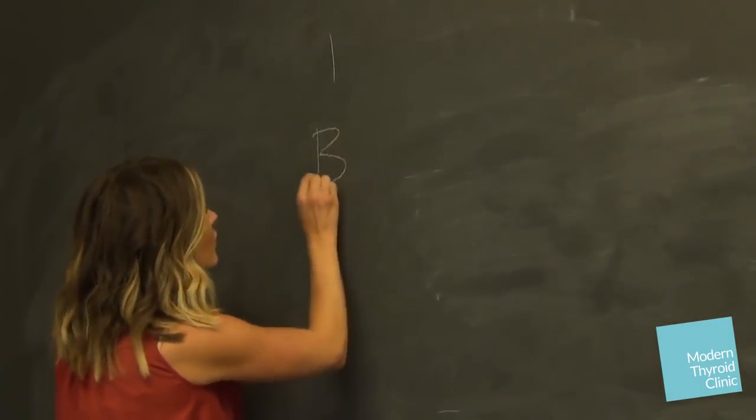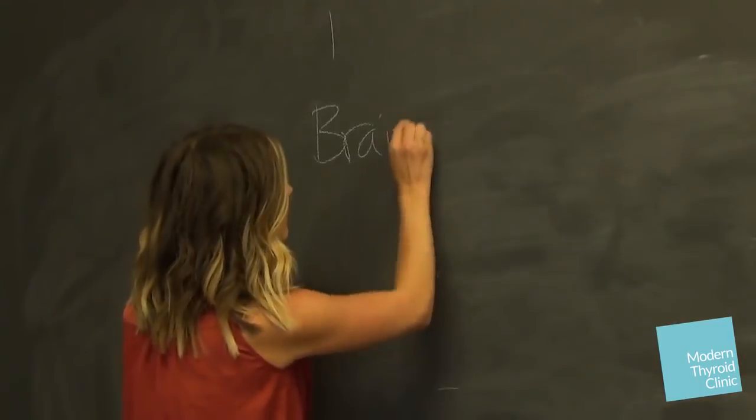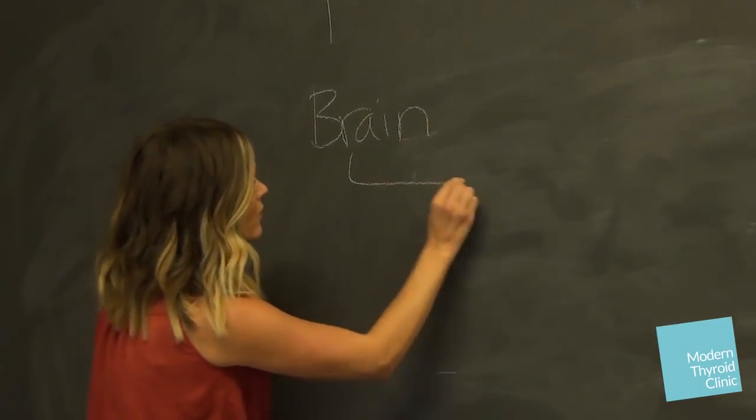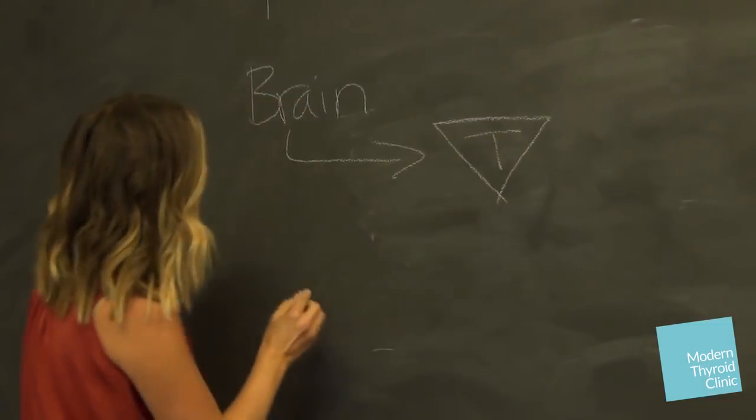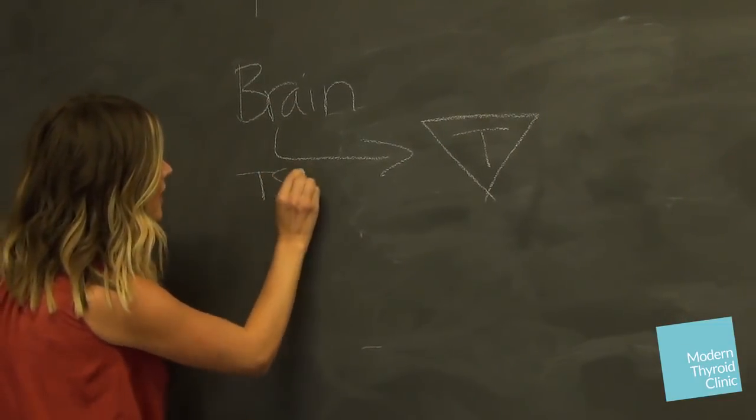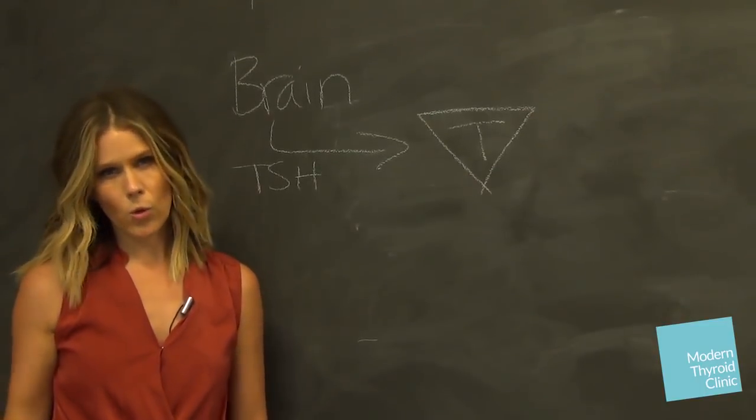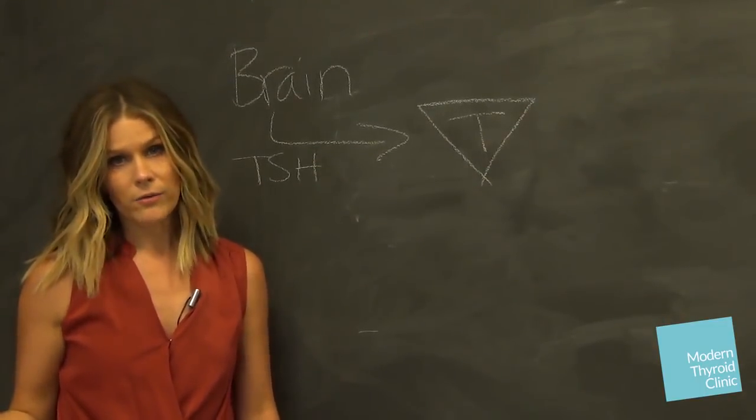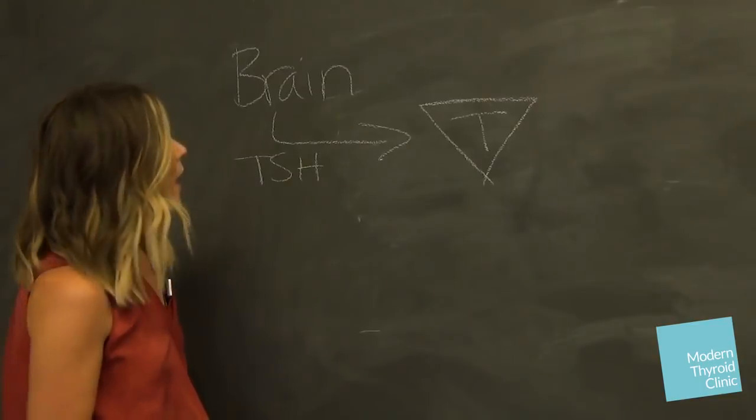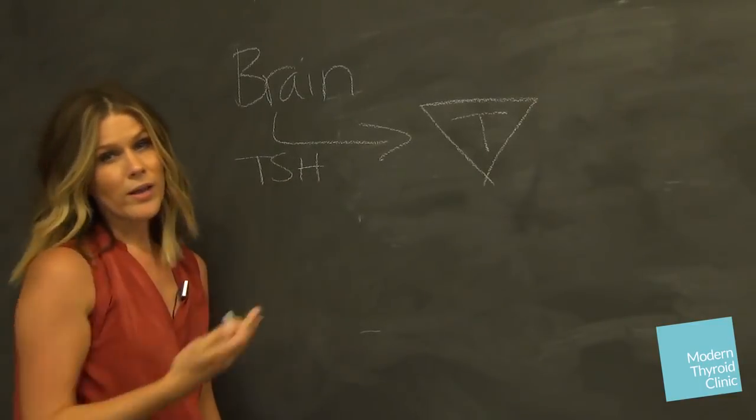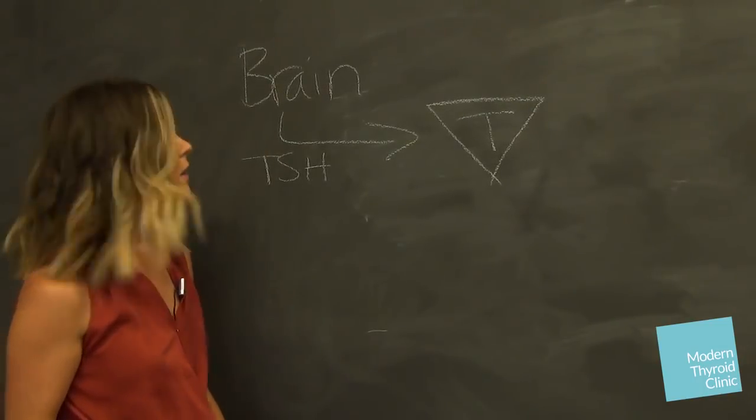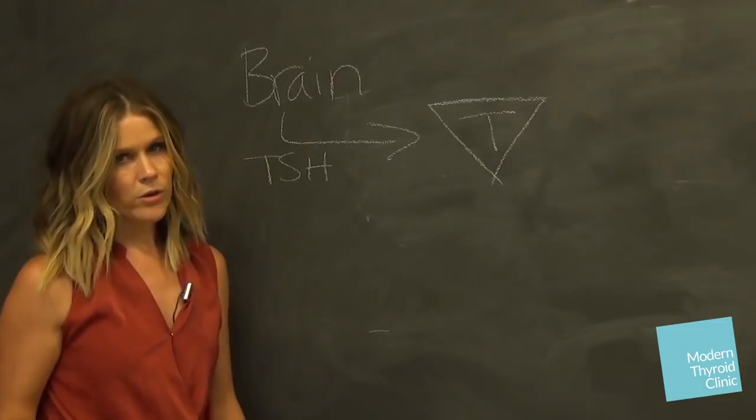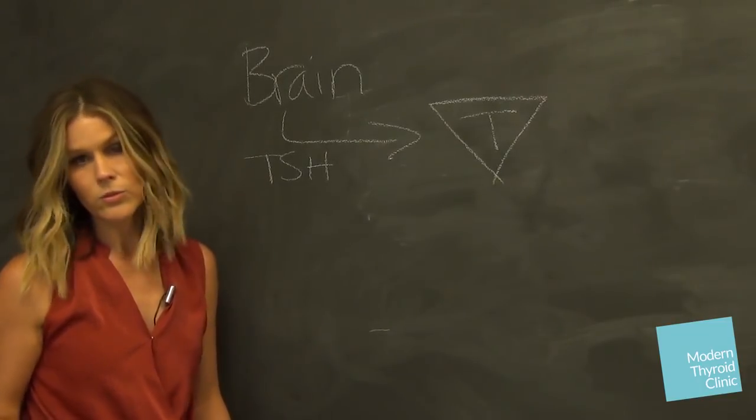Let's start down here. So your brain sends a message to your thyroid by way of a hormone called TSH, thyroid stimulating hormone. So it does just that, it stimulates your thyroid. This is really what regular medicine uses to diagnose and manage people's thyroid, and we're going to dig in a little deeper and I think you'll understand why this system doesn't really work for everyone.